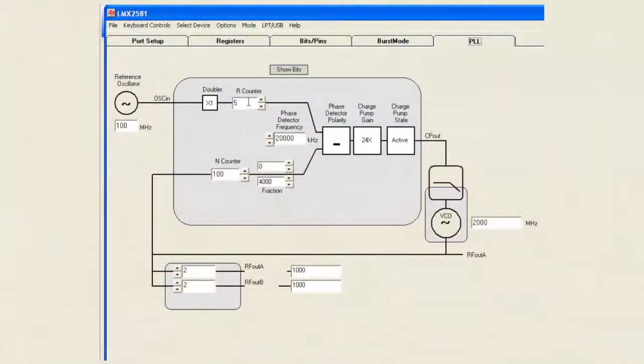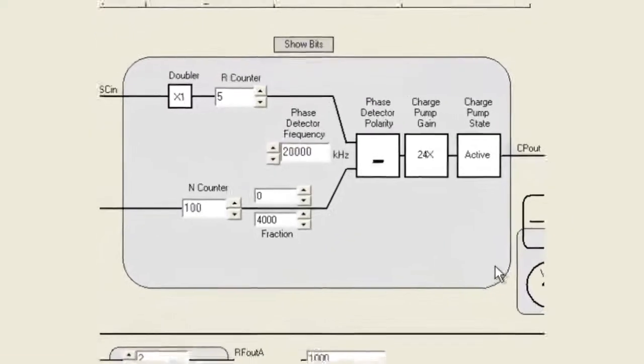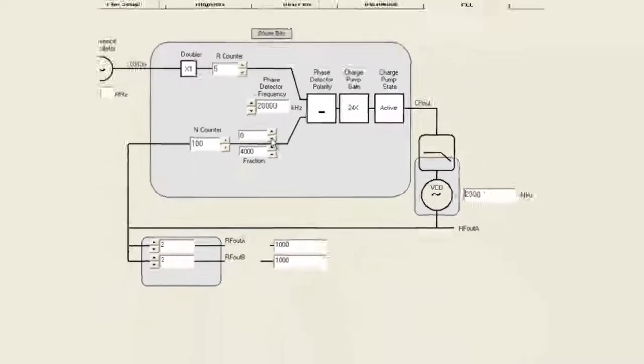On the computer here, we have the 100 MHz crystal oscillator. We're dividing this by 5 to get a 20 MHz phase detector frequency. The output frequency is 2 GHz. The charge pump gain can be programmed anywhere from 1 to 32 times. This allows the user the flexibility to compensate for differences in the VCO gain. The fractional denominator is fully programmable from 1 to 4194303 and anything in between. And of course, the numerator is programmable as well.